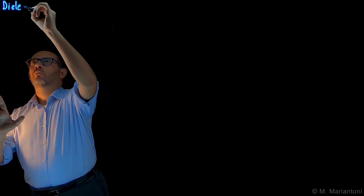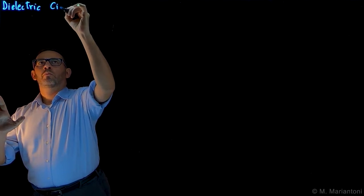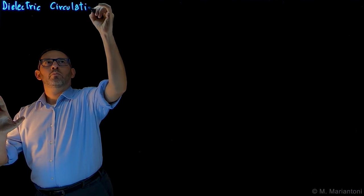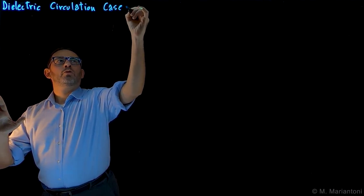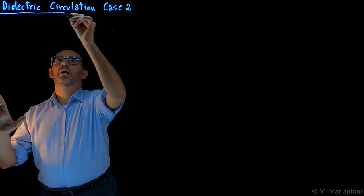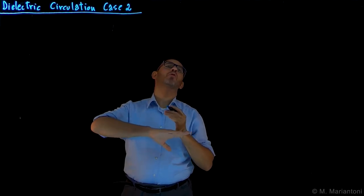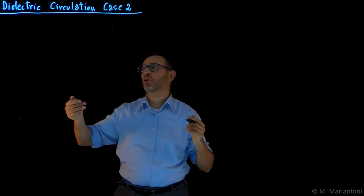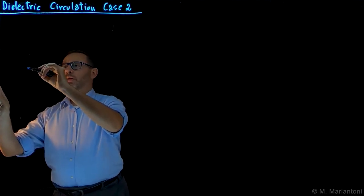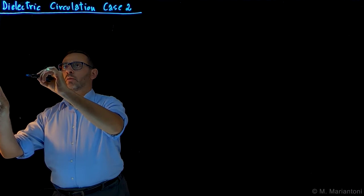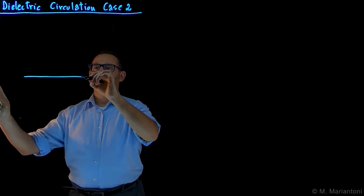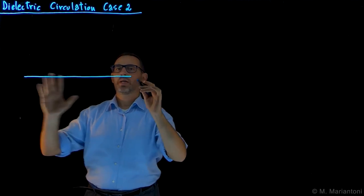The name of this video is dielectric circulation case 2. Once again, we are going to study two dielectric materials, let's say amber and glass, separated by an aluminum sheet with some surface sigma f charge density. As always, let us sketch here the surface of separation in 2D between the two materials.